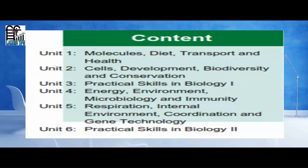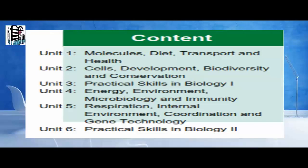Unit 3 is Practical Skills in Biology. Unit 4 is Energy, Environment, Microbiology and Immunity. Unit 5 is Respiration, Internal Environment, Coordination and Gene Technology. Unit 6 is also Practical Skills in Biology.